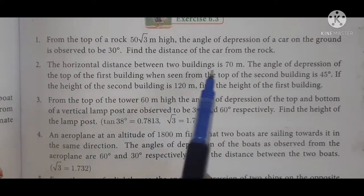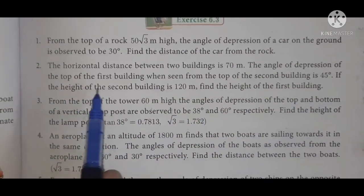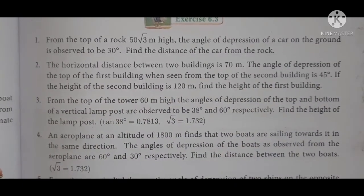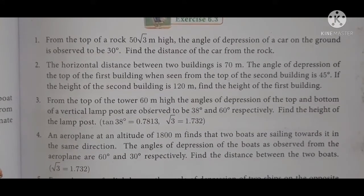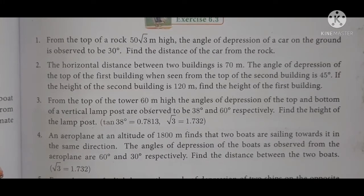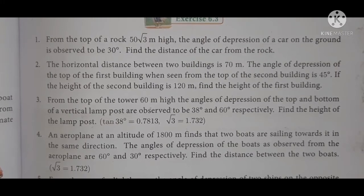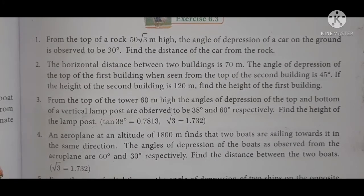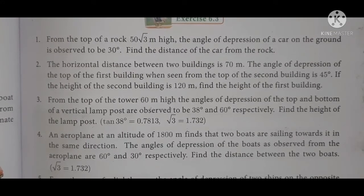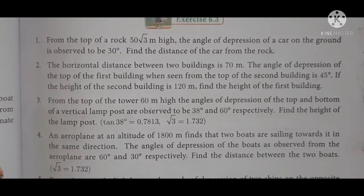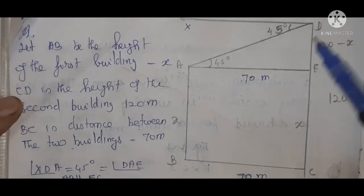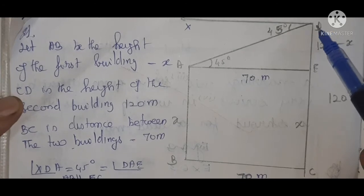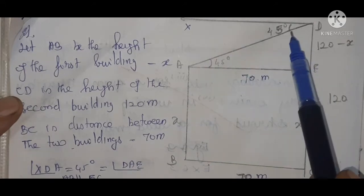Exercise 6.3, Question 2: The horizontal distance between two buildings is 70 meters. The angle of depression of the top of the first building, when seen from the top of the second building, is 45 degrees. If the height of the second building is 120 meters, find the height of the first building. The height of the second building CD = 120 meters. AB is the height of the first building, taken as x.